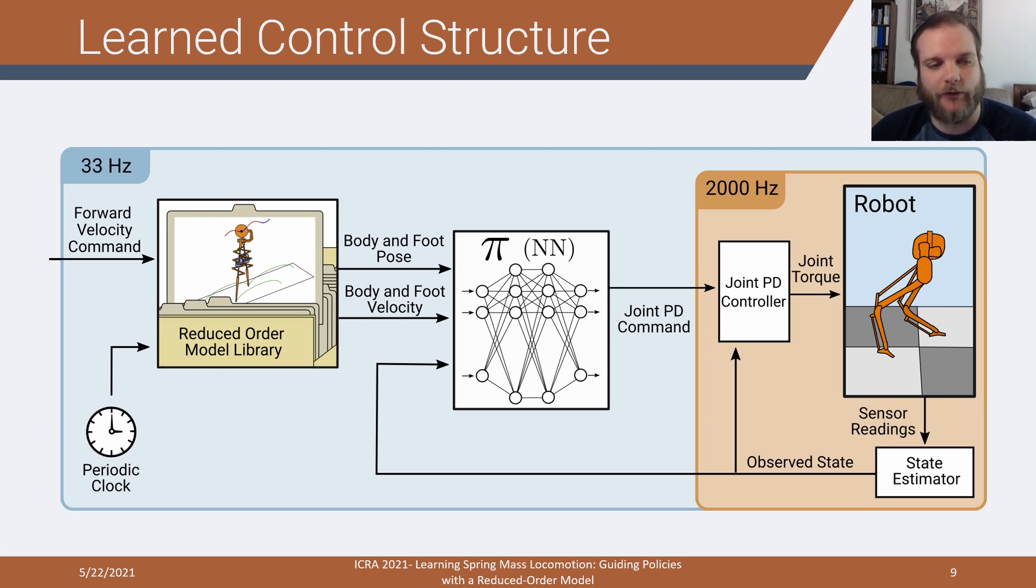These all get fed into the neural network, which in our case is a feed forward neural network with two hidden layers, each of which is 256 by 256. The output is the 10 dimensional set of joint PD targets. These joint PD targets are then sent to a joint PD controller running in this two kilohertz high frequency loop. You have the joint torque fed into the robot, it gets applied. We get back out the sensor readings, which go back into that state estimator, which allows us to update both the joint PD commands and the neural network.